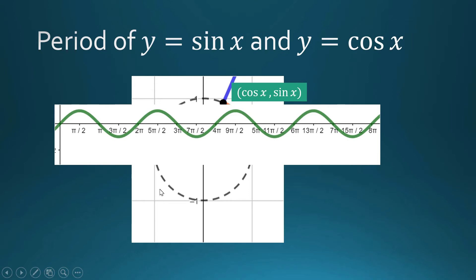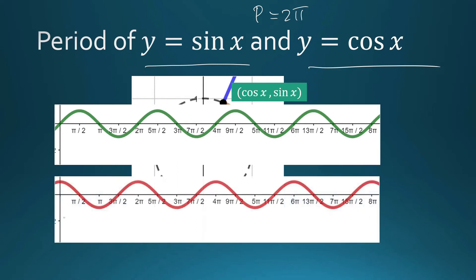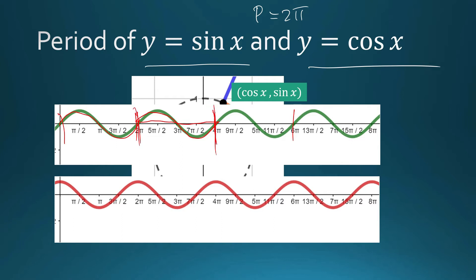Our sine and cosine functions are periodic. The period for y = sin(x) is 2π, and the same for y = cos(x). Our symbol for period is p. We can understand the period as the length of the interval that contains one complete sine curve — for example, from 0 to 2π is one sine curve. From 2π to 4π is another, and from 4π to 6π another. The period is the horizontal distance covered by exactly one sine curve.